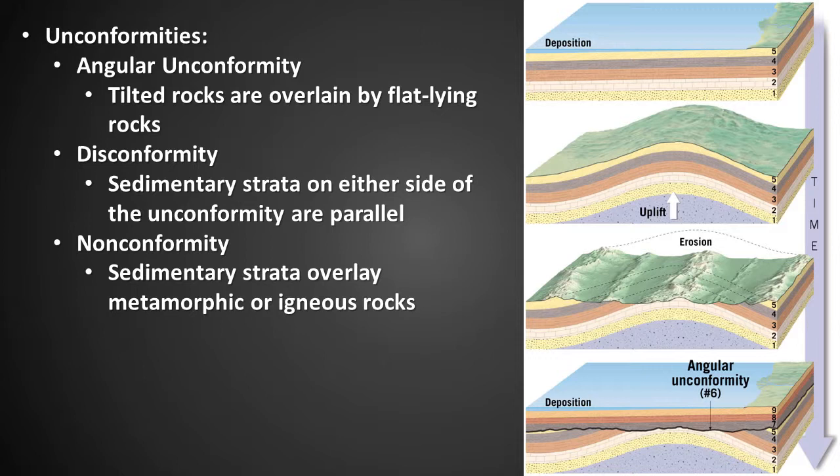The graphic depicts the formation of an angular unconformity. Step one: deposition of a geologic unit or units. Step two: uplift and folding of this older geologic unit or units. Step three: erosion of these older geologic units. Step four: deposition of younger geologic units.